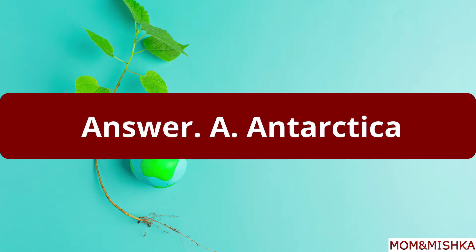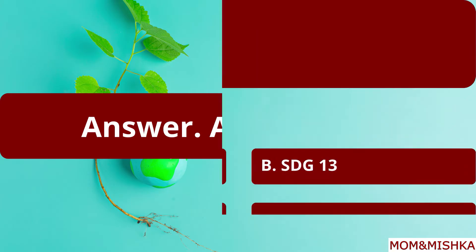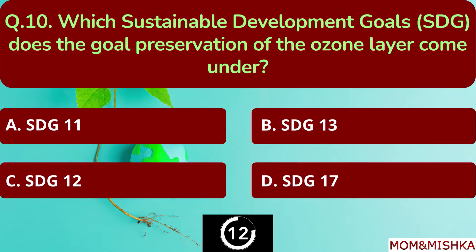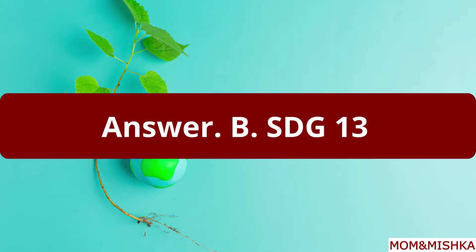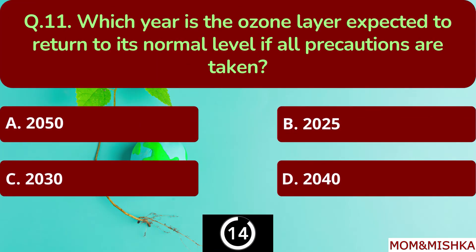Where is the ozone hole located? In Antarctica. Option A. Which sustainable development goal does the goal of preservation of the ozone layer come under? It's sustainable development goal number 13. Option B: SDG 13.